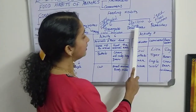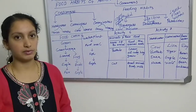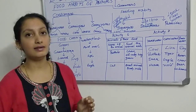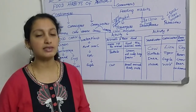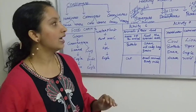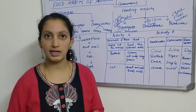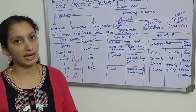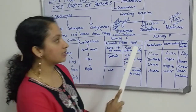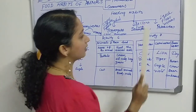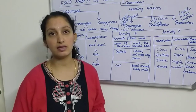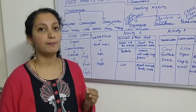The second group is decomposers. Decomposers degrade the dead remains of plants or animals with the help of enzymes present in their bodies, breaking down all the organic particles in the dead remains. This also helps clean up the environment. Examples are bacteria and fungi, which have special types of enzymes for the decomposition process.